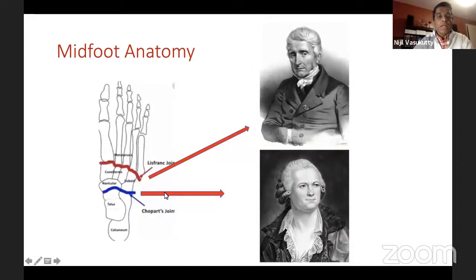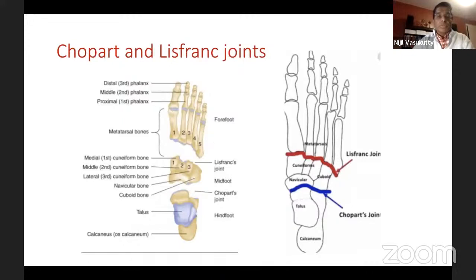These two eponymous joints — the Lisfranc joint and the Chopard joint — were described by two gentlemen. Lisfranc was a French surgeon and gynecologist, and Chopard was, incidentally, a French urologist. The mid-foot technically consists of the navicular, the cuboid, and the three cuneiforms. The Lisfranc joint lies between the metatarsals and the navicular, and the Chopard joint is technically the talonavicular and the calcaneocuboid joint.